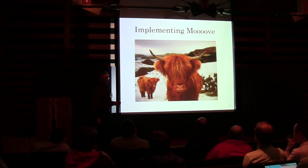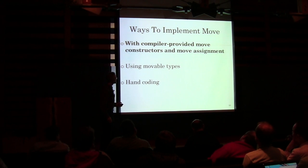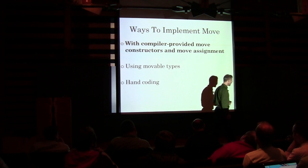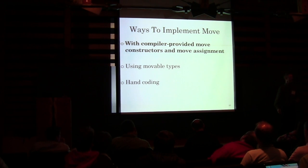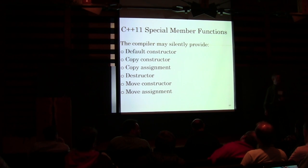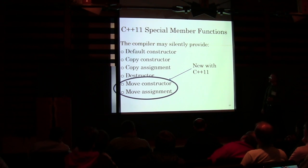There are three different ways of looking at the problem. The compiler does a lot of move stuff for you. Then there are all those types in the standard library that are movable. And eventually, sometimes you have to write your own code. These are the C++11 special member functions — and these two at the bottom, the move constructor and move assignment, are new with C++11. The compiler will build these things for you — sometimes.